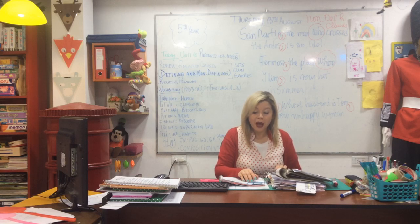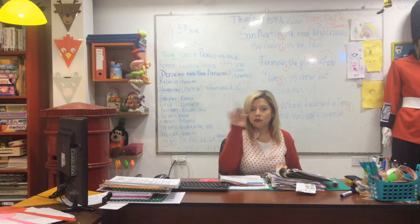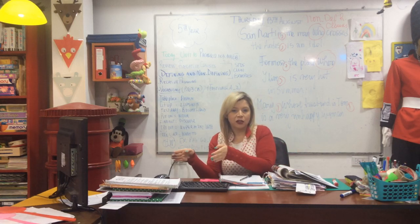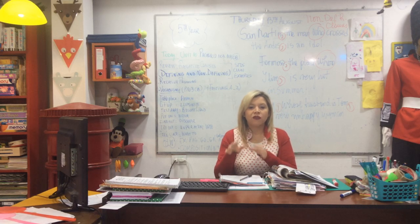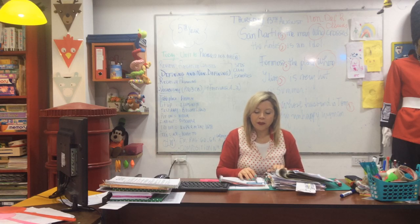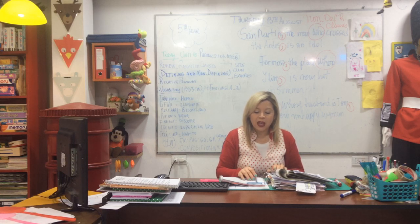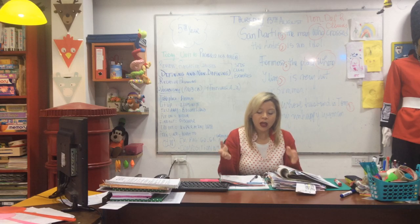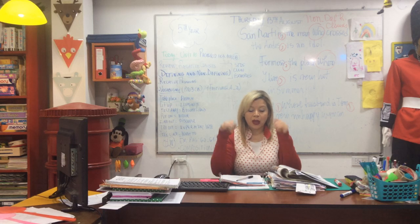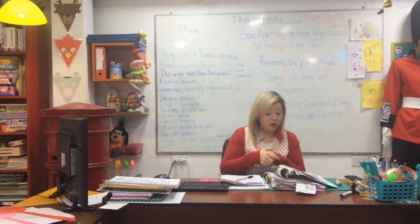Number 4: 'He went to Madrid where he studied art at the academy.' For non-defining you need extra information — like 'San Martín, the man who crossed the Andes, is an idol' or 'Mary, the woman who lives next to my house, is very unhappy.' Number 5: 'His paintings often show very large people who Botero calls his fat people.' Number 6: 'His paintings, which cost millions of dollars, are very popular today' — another non-defining relative clause with commas.